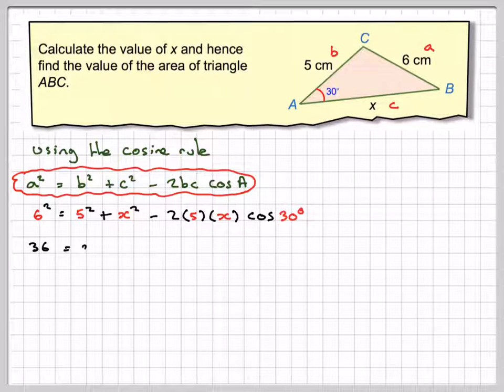6 squared is 36, 5 squared is 25, x squared, and we've got 2 times 5, which is 10, and cos of 30, and cos of 30 is root 3 over 2. This 2 and 10 will cancel.